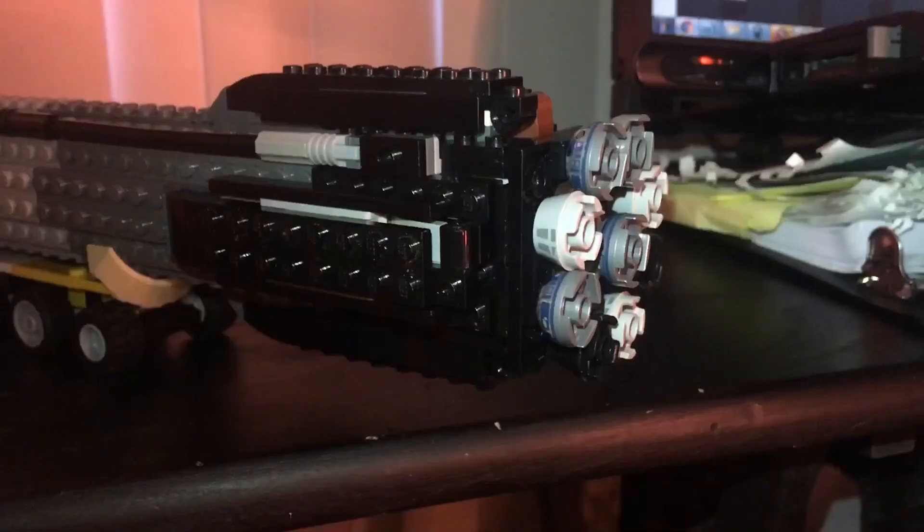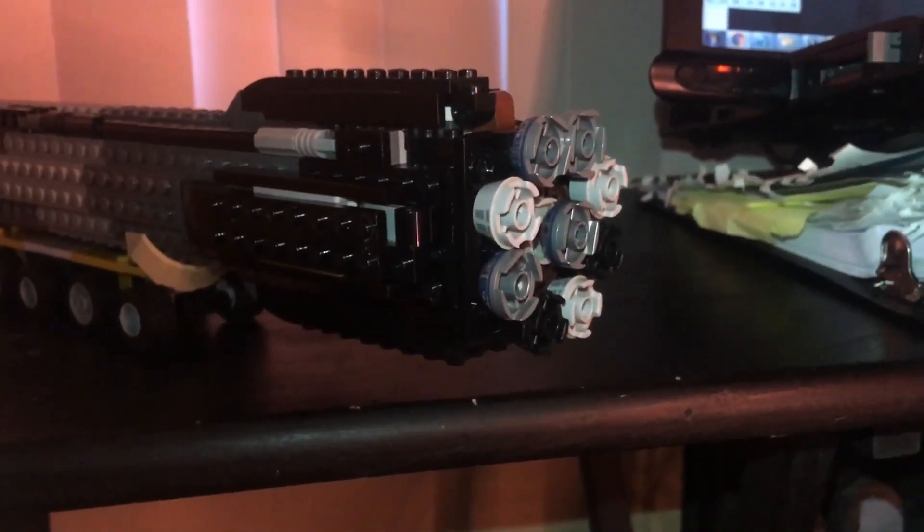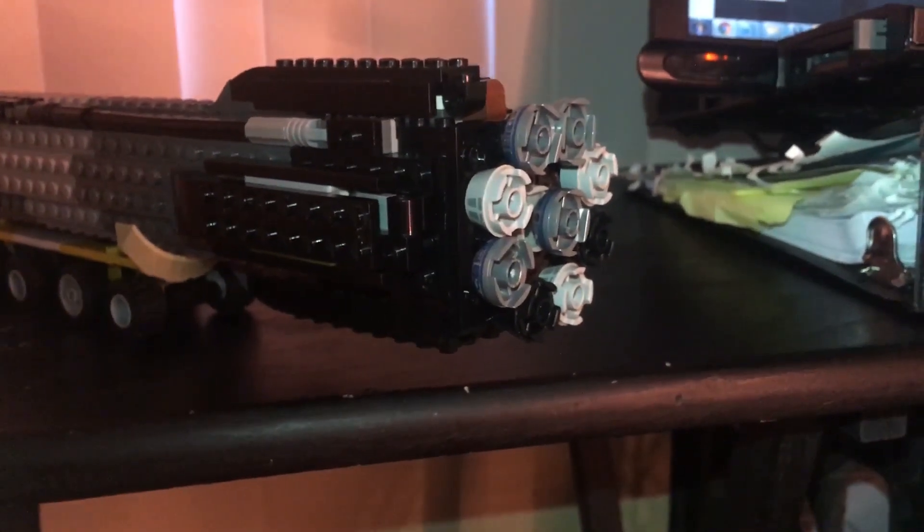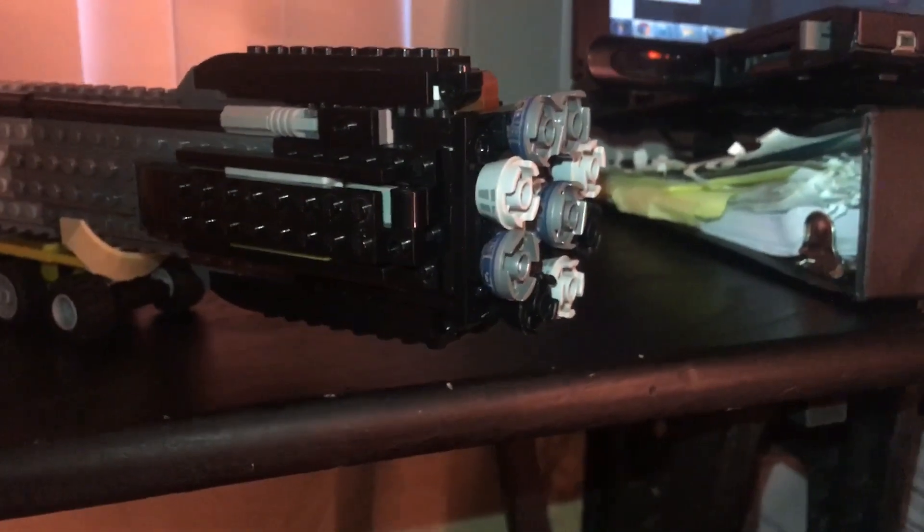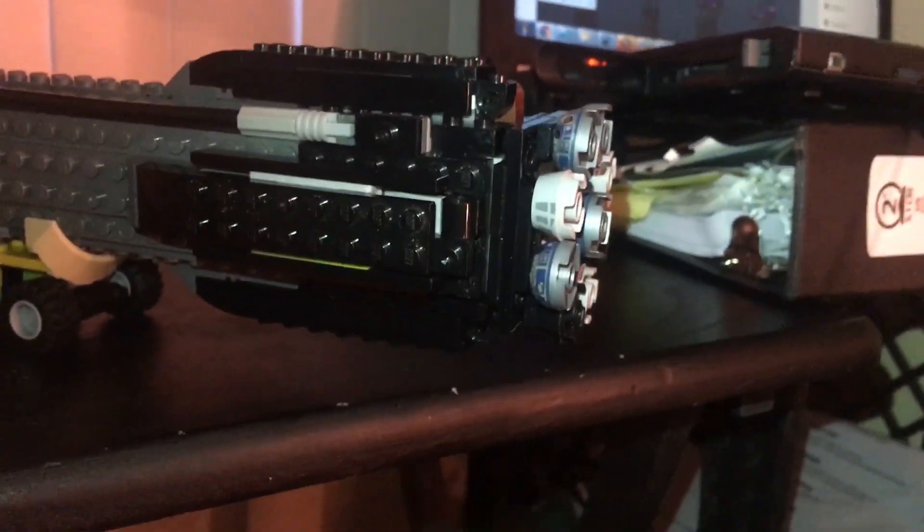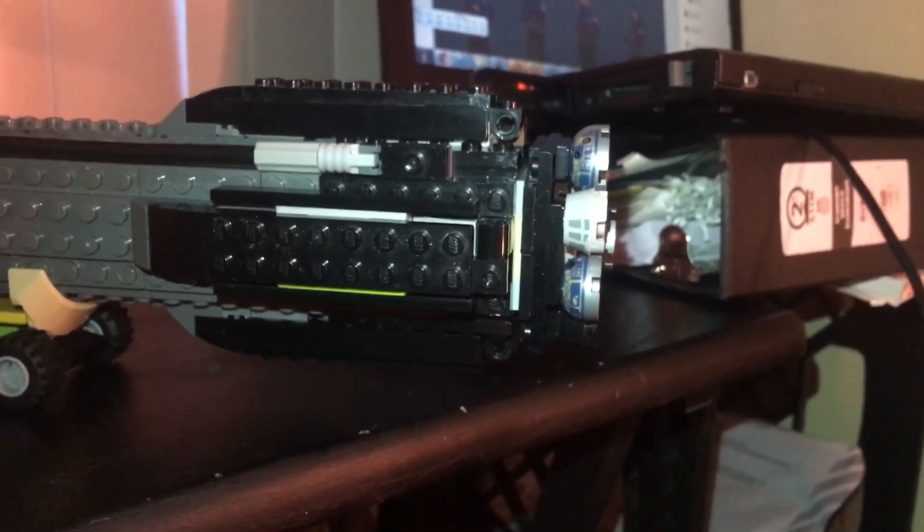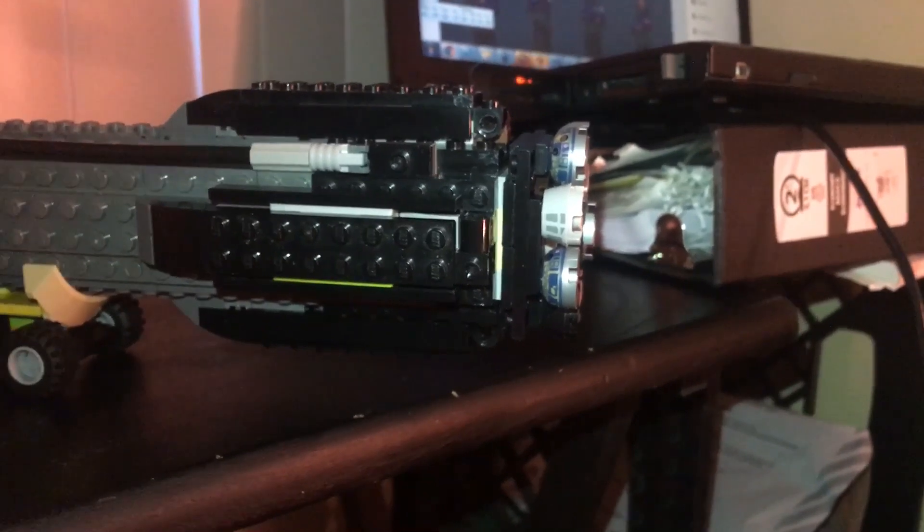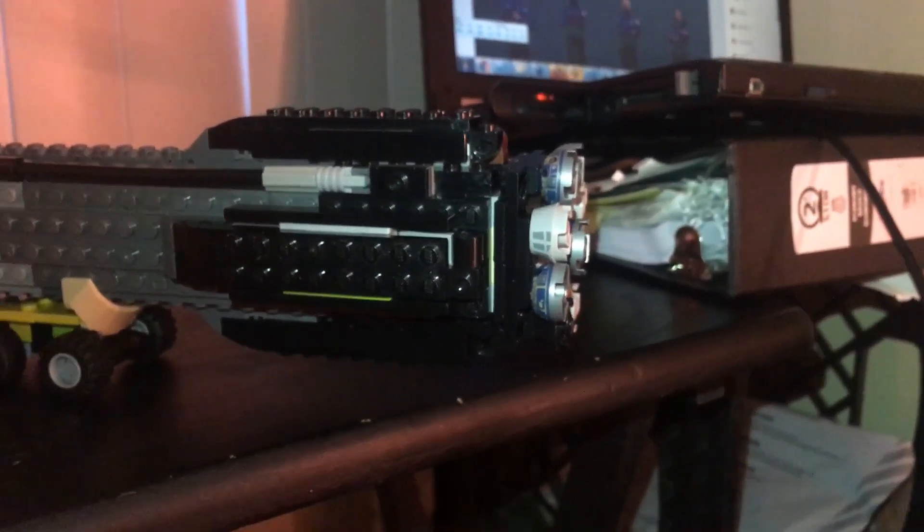Now let's take a closer look at the first stage. The first stage of Falcon 9 has nine Merlin 1D engines, and they're arranged in a formation called an octaweb, with eight on the outside and one in the middle. One detail many people may not realize about the octaweb is that the middle engine is actually lower than the other eight, and this is to increase the gimbal range of that one engine because it's used for the landing burn.